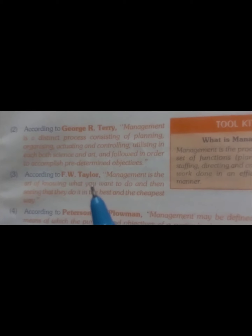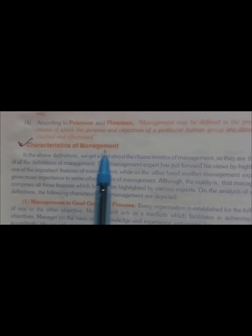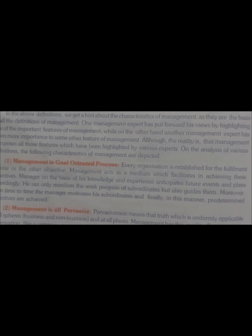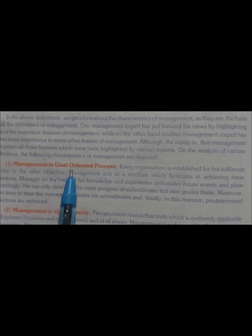Now after the meaning, we start with the characteristics of management, that is, the features of management. The first feature is: management is a goal-oriented process, which means management is basically related to the objectives that any organization sets up before startup. Management helps you to achieve that objective by giving knowledge based on experience of future events and plans.